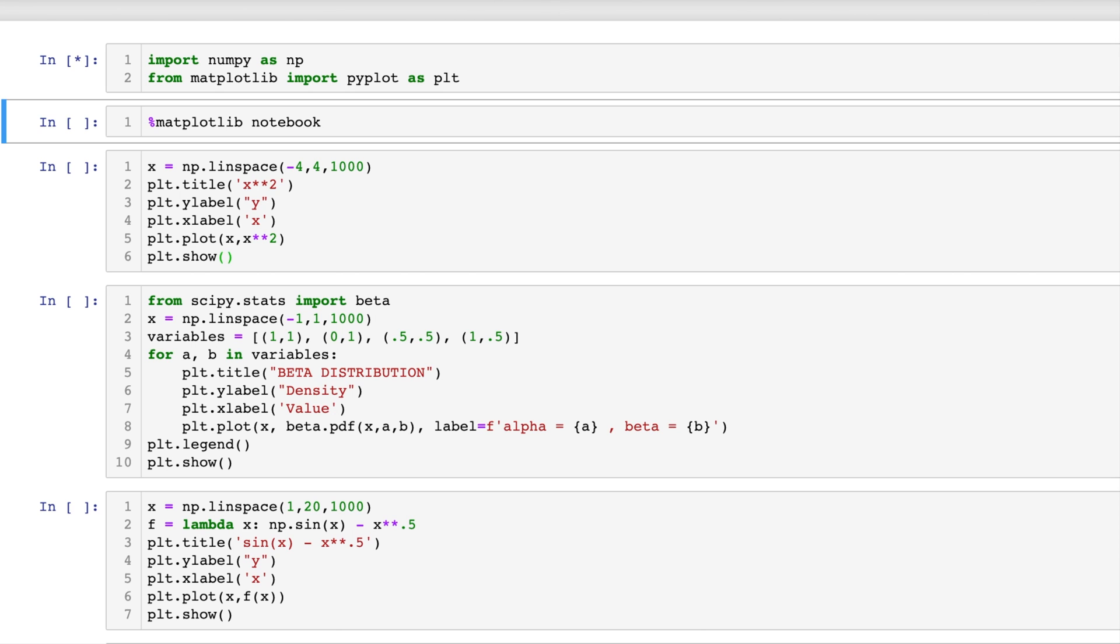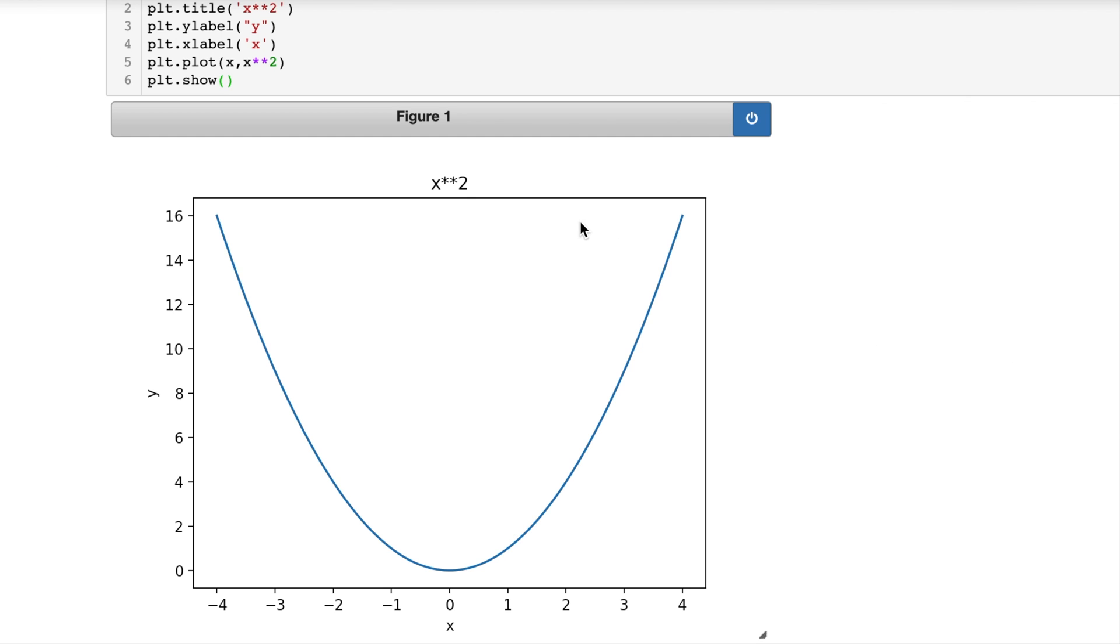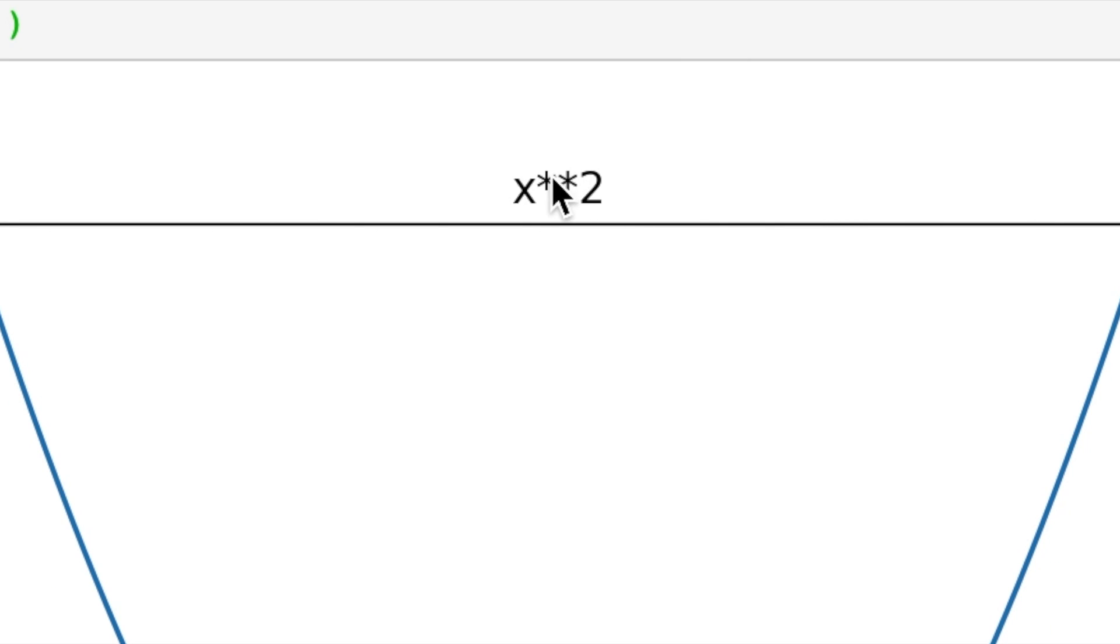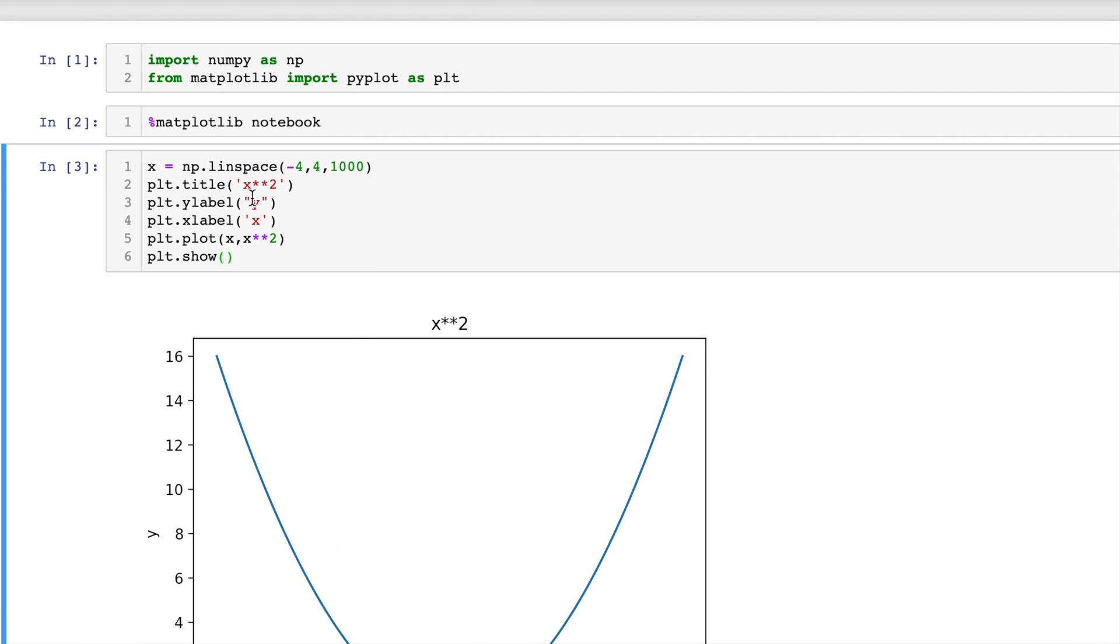Let me go ahead and run this code and up first we have the plot for x squared and you can see that title right there is pretty ugly. It's an x and a star star with a 2. So let's go ahead and change that.